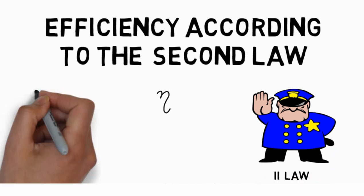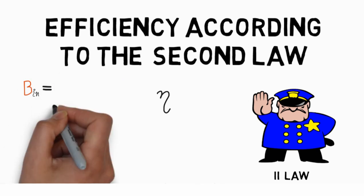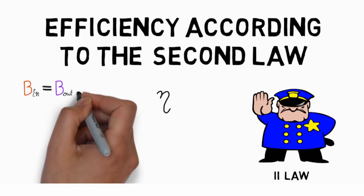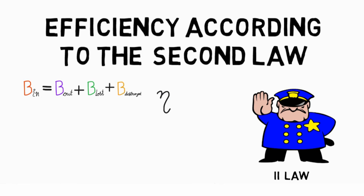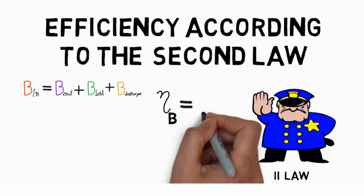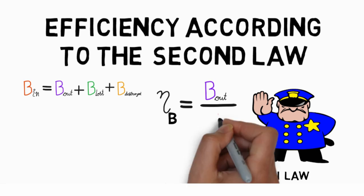The exergy balance equation of a process is given as exergy intake equals the sum of exergy output, exergy lost and the exergy destroyed. Efficiency of exergy is defined as exergy output upon exergy input.